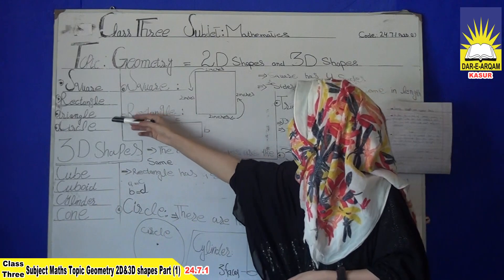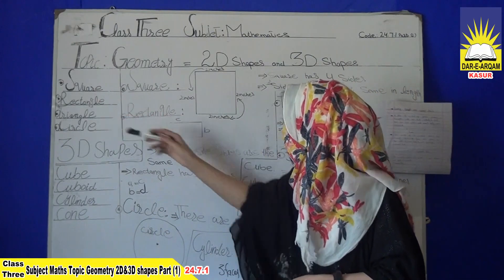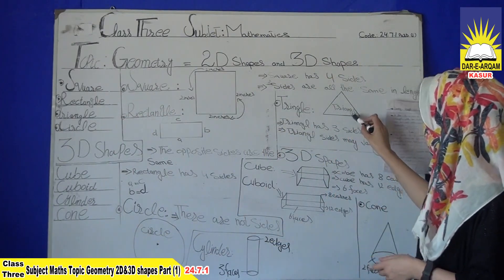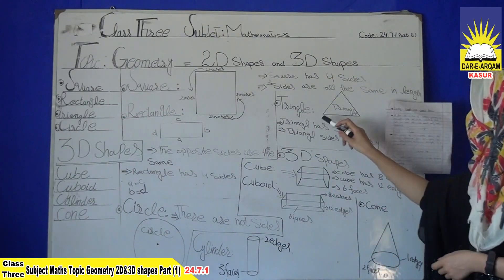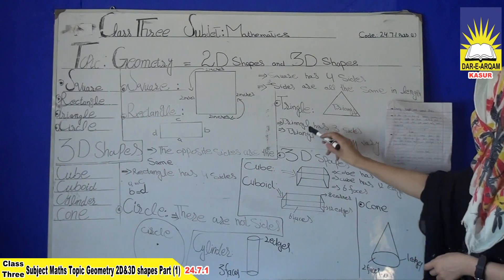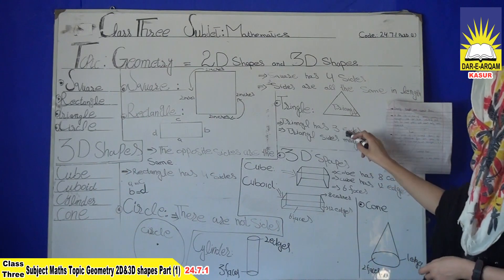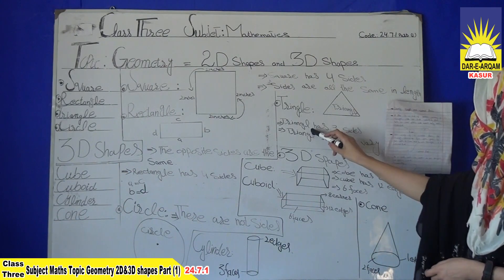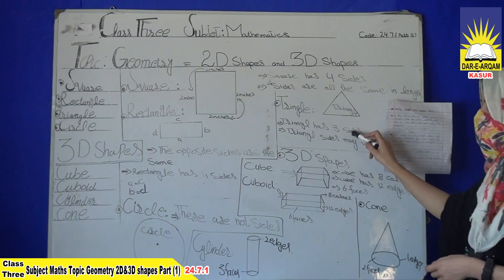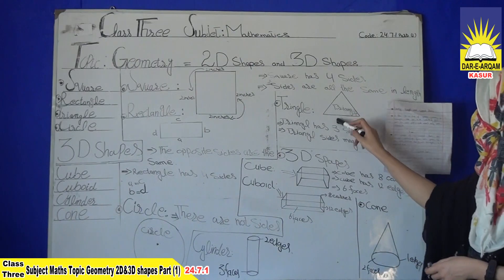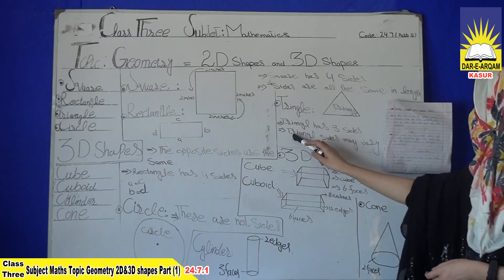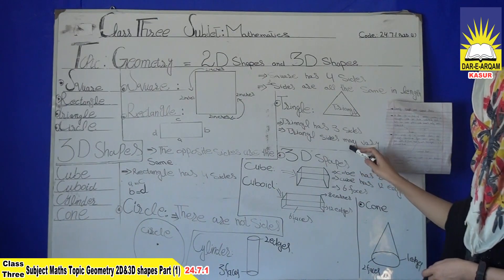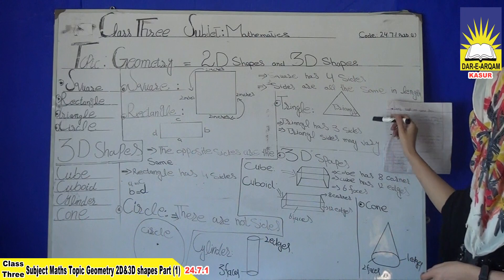Next we have a triangle. A triangle has 3 sides: 1, 2, 3. Triangle sides may vary in length and width.